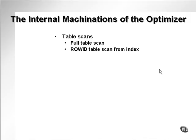The internal machinations of the optimizer — the way in which the optimizer guesses at how it should execute SQL code in the fastest way. There are in general a few different ways that the optimizer will assess and decide to read things in the database, either from the database buffer cache, I/O, or both.